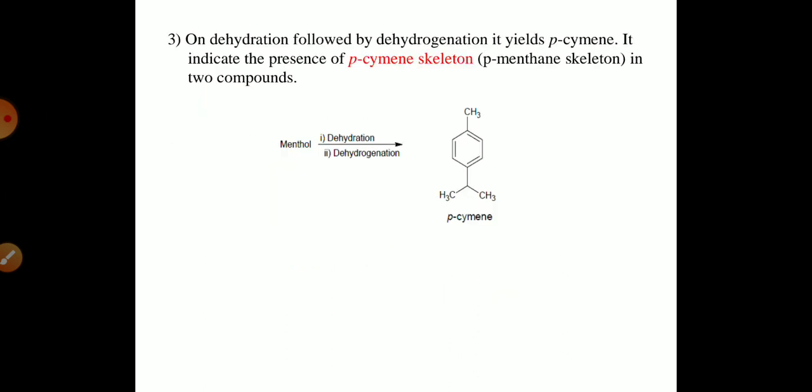On the dehydration followed by the dehydrogenation, it yielded the p-cymene and it indicated the presence of the p-cymene skeleton in these two components.